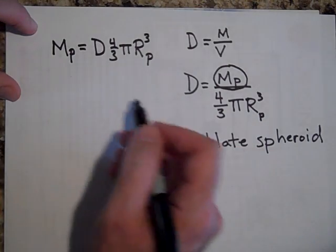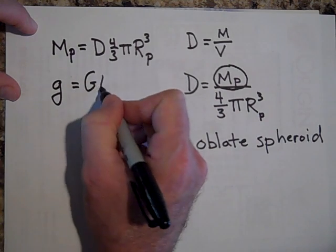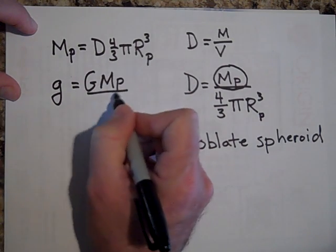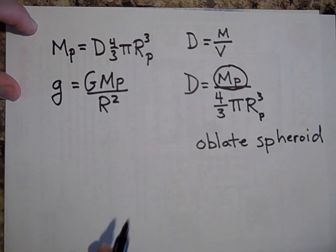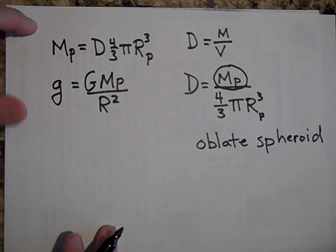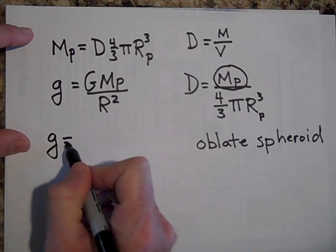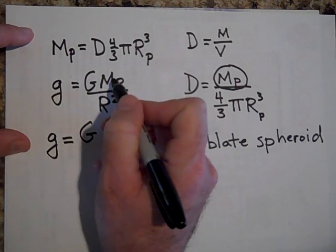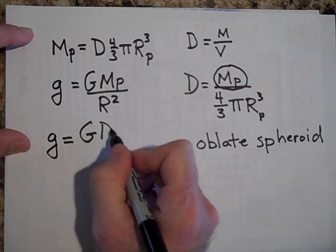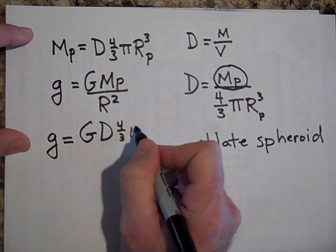And I'm going to go ahead, I just solved for the mass of the planet. And now I'm going to go ahead and insert that into this equation, our equation for g of a planet. And so the equation then is going to be: mass of the planet is G, there's D times four thirds, four thirds pi, R cubed, all over R of the planet squared.